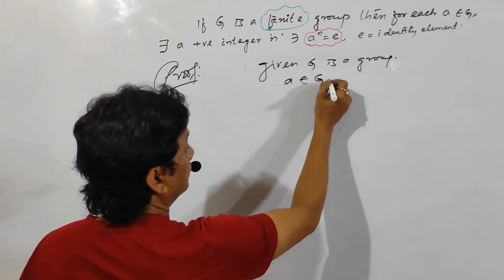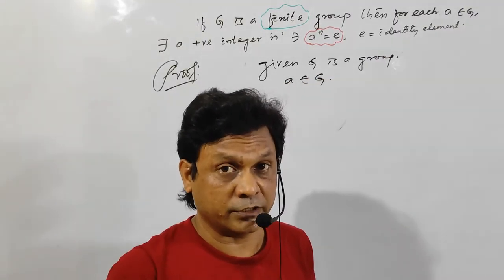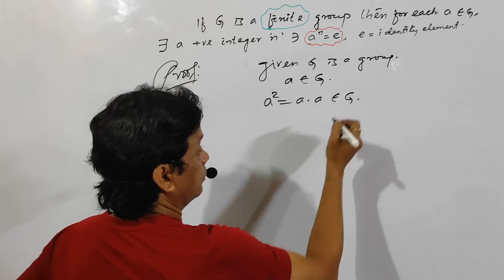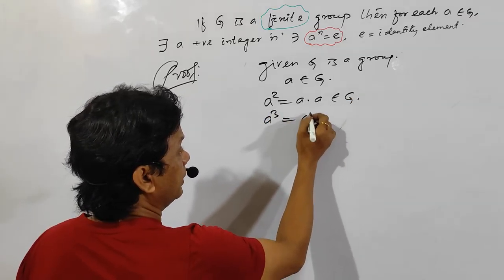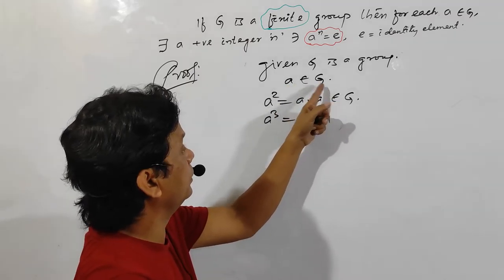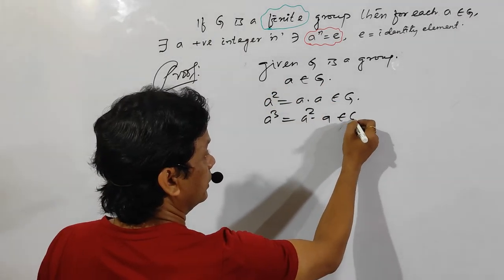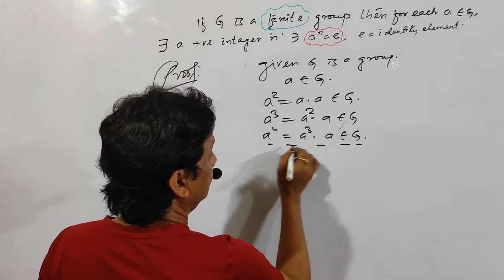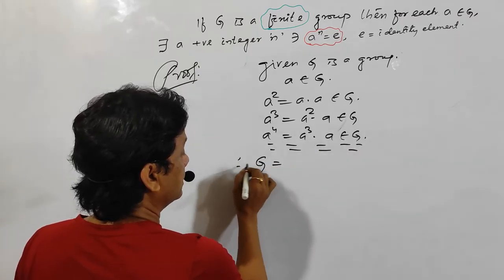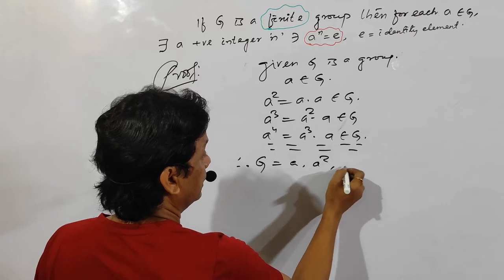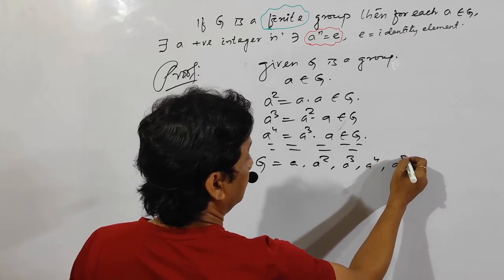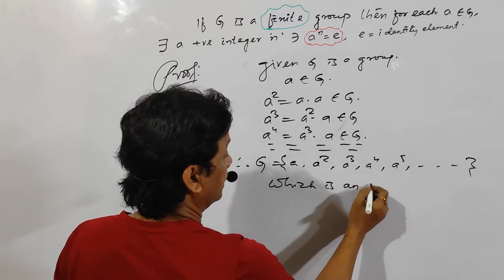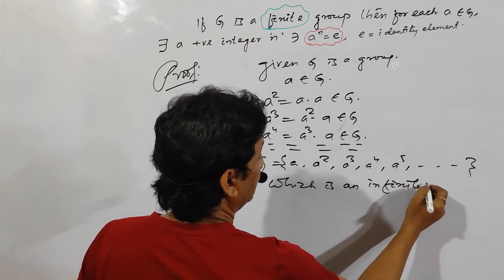Since G is a group and a belongs to G, by the closure axiom: a squared equals a times a, belongs to G. A cubed equals a squared times a, and since a squared belongs to G and a belongs to G, a cubed also belongs to G. Similarly, a to the 4, a to the 5, and so on all belong to G. So G can contain {a, a squared, a cubed, a to the 4, a to the 5, ...}, which would be an infinite set.